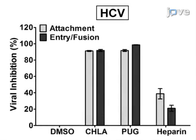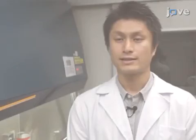For example, a luminometer is used to assess the luciferase activity in the cell supernatant from infection by a reporter virus. The main advantage of this technique is that it can allow a more mechanism-based approach in identifying antiviral agents, particularly those targeting viral entry.